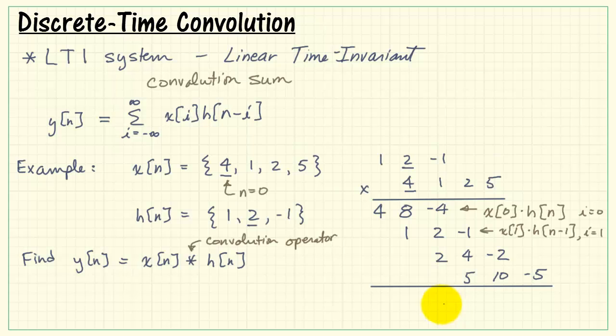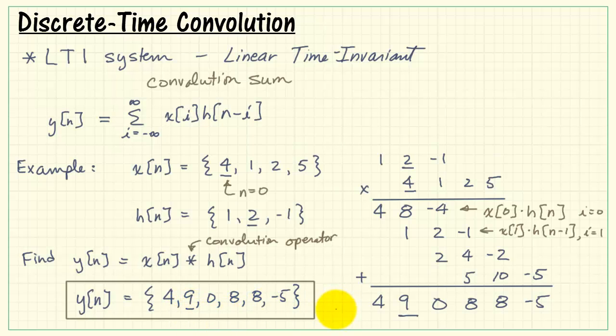Now according to our convolution sum, we need to add all of these results together. So I'm adding column-wise here. There's another 8, and there's minus 5. This sequence is my result for y of n. We also need to make note of the n equals 0 point, and that would be located right here. And that's the convolution sum.